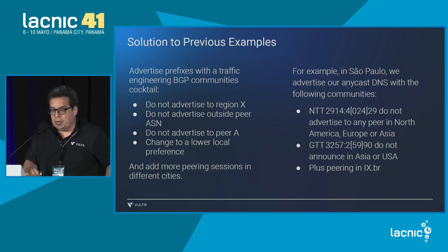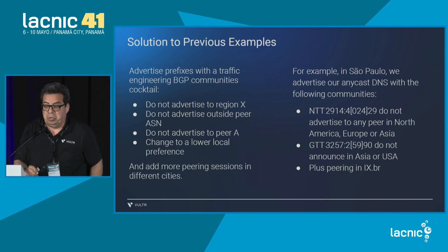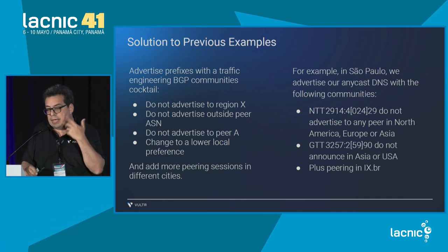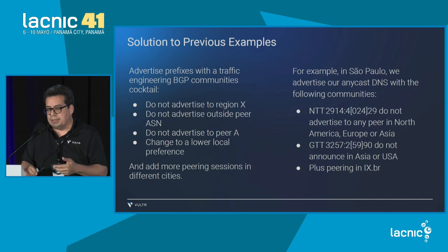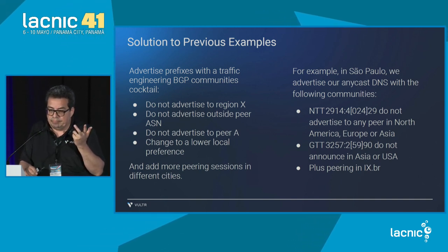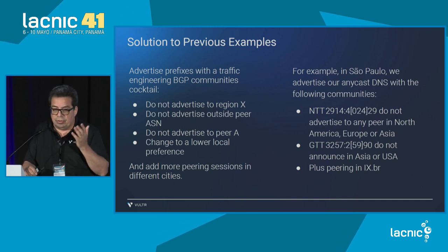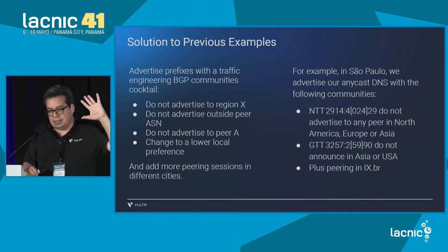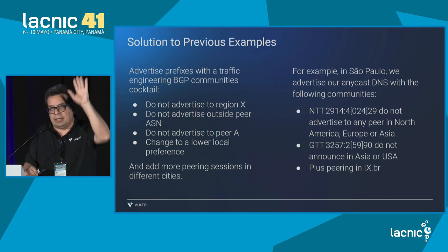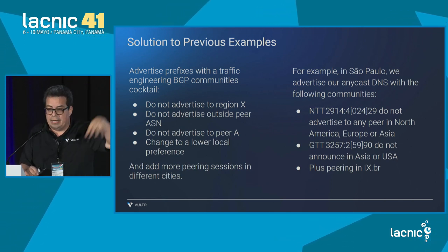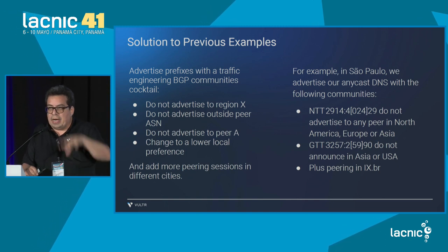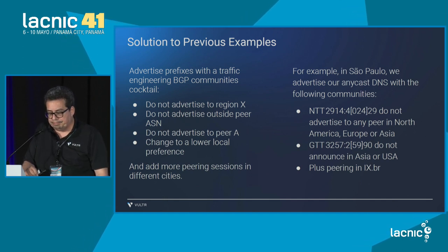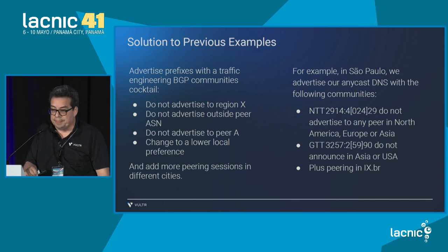The solution for the previous examples was the typical approach: working with BGP communities, traffic engineering with a cocktail — that's what we call it — of a number of BGP communities. For instance, if I am in Singapore, not to send traffic to Europe. If I'm in Chile, avoid sending it to the United States or Asia, not to propagate those prefixes, or to propagate them but with smaller local preference in other regions.